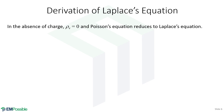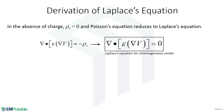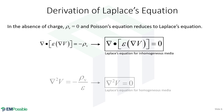Now on to Laplace's equation. Laplace's equation is Poisson's equation but in the absence of charge. So if we set the charge term to zero, the inhomogeneous Poisson's equation becomes the inhomogeneous Laplace's equation — inhomogeneous meaning permittivity can be a function of position. If the permittivity is homogeneous and constant everywhere, it can come outside the divergence operation and to the right-hand side, combining with zero to give just zero. We end up with Laplace's equation for homogeneous media: the Laplacian of the electric potential equals zero.